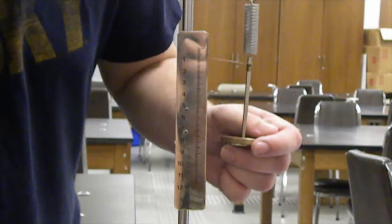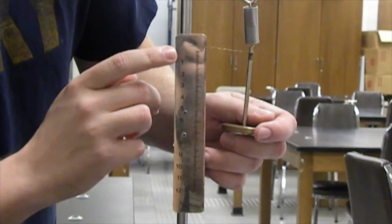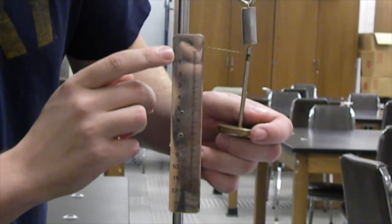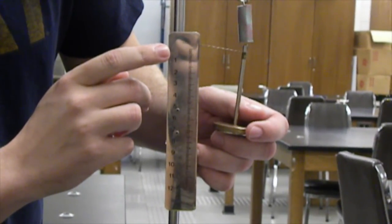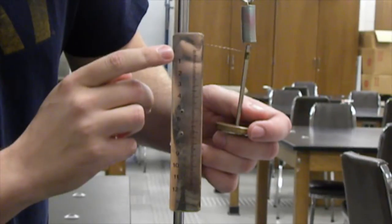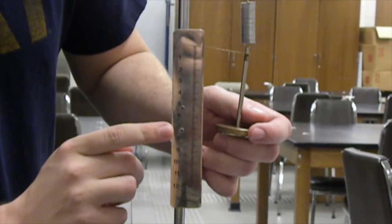Our next step is to raise the hanger so that the pointer is at the zero mark. Then we're going to measure the maximum displacement by releasing the hanger and recording the lowest position the pointer drops to on the scale.